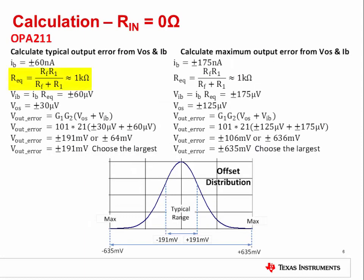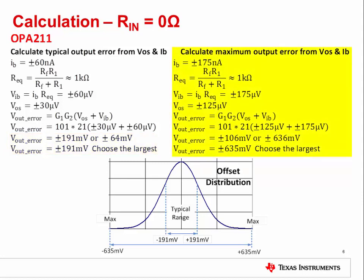First, calculate REQ, the equivalent input resistance, then multiply REQ by IB to determine the input voltage due to IB. Next, use the equation Vout equals G1 (gain of the first stage) times G2 (gain of the second stage) times the sum of VOS and VIB to calculate the total output. There are four possibilities — pick the largest value. Repeat the same steps using the maximum values instead of the typical values. The plot on the bottom shows the Gaussian distribution of possible output values.